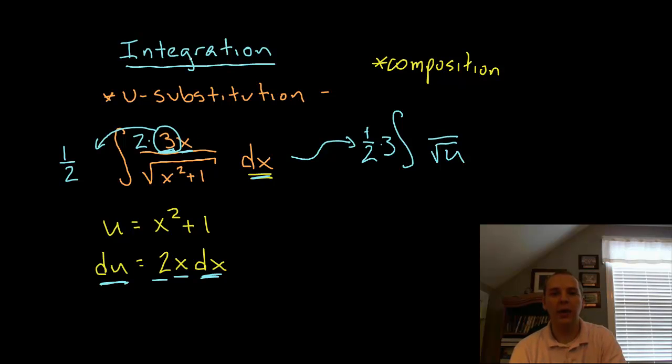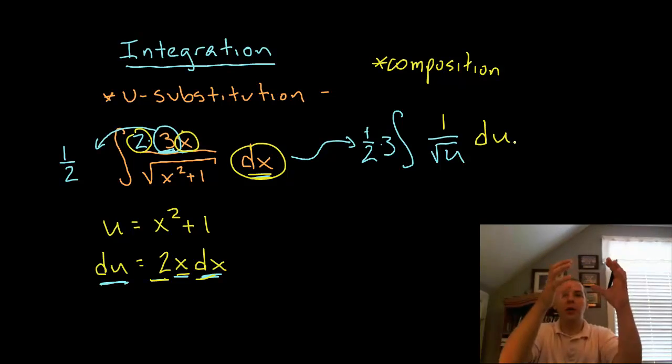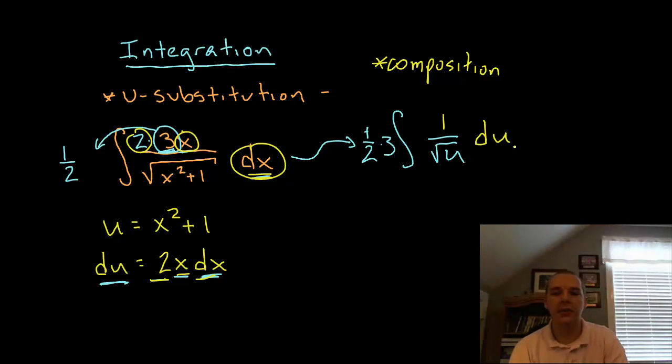And then the 2x dx, keeping out on these terms the 2, the x, and the dx, all 3 of these are equivalent to du. So you could either write the du right here in the numerator, or the way I think I'm going to write it is 1 over the square root of u times du. You can take that numerator and just set it off to the side like this.